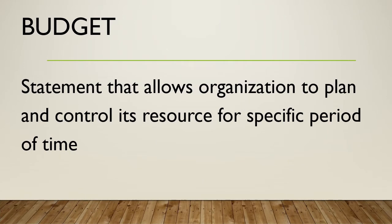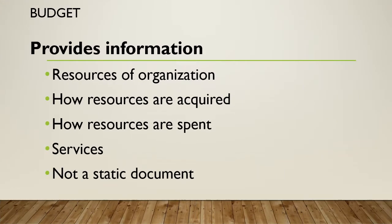Now let's look at the budget. It's a statement that allows organizations to plan and control their resources for a specific period of time. The budget is often stated in dollars, but it can also look at work hours, units of production, or other descriptive or measurable units. The budget provides specific information: resources of an organization, how we acquire resources, and how resources are expended. It's not a static document — it's a living, dynamic document. Overall, the budget represents the manager's ability to estimate or predict how resources are going to be acquired or expended.